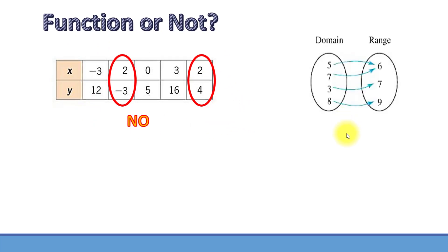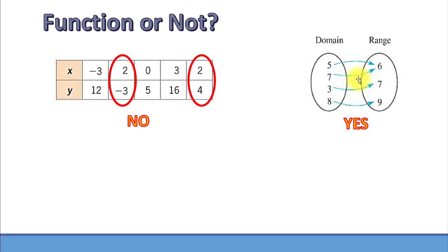Here's one more example. Is this a function? Yes, it is. Here we can see that each input has a unique output. You might be questioning why we have two arrows going to 6 — that's because input 5 has the corresponding output 6 and input 7 has the corresponding output 6. However, this still satisfies the definition of a function because each x has only one corresponding y.